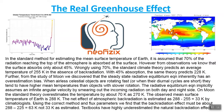The observed mean surface temperature of Earth is 288 Kelvin. The net effect of the atmospheric back radiation is estimated as 288 minus 255, that is 33 Kelvin by climatologists. This 288 is from observation and 255 is the estimate using 70% absorption at the surface. But using the correct method and correct flux parameters, we find that the back radiation effect must be about 288 minus 225, that is about 63 Kelvin, not 33 Kelvin as estimated.